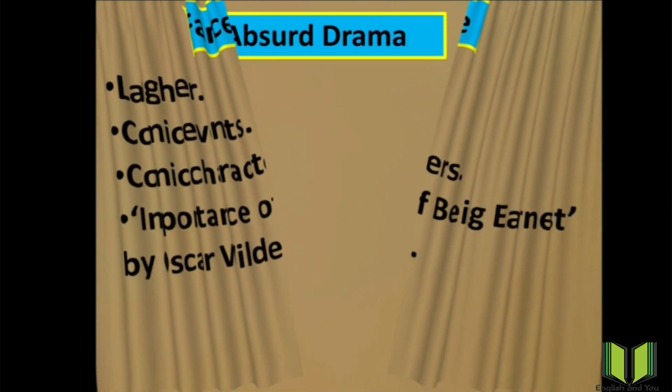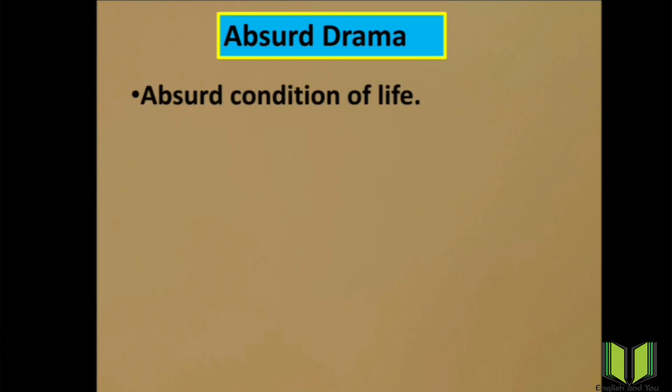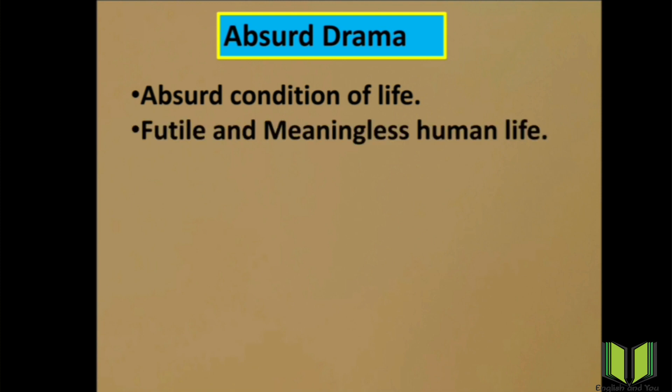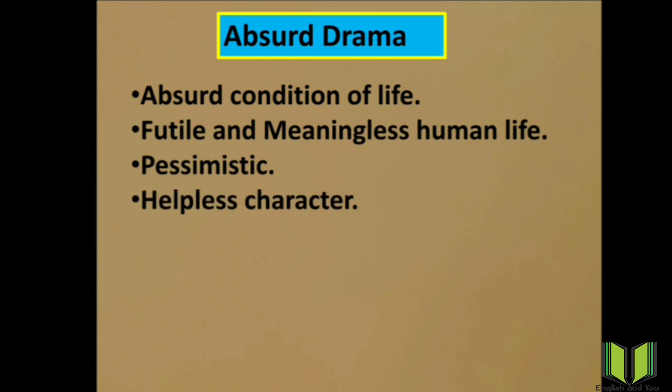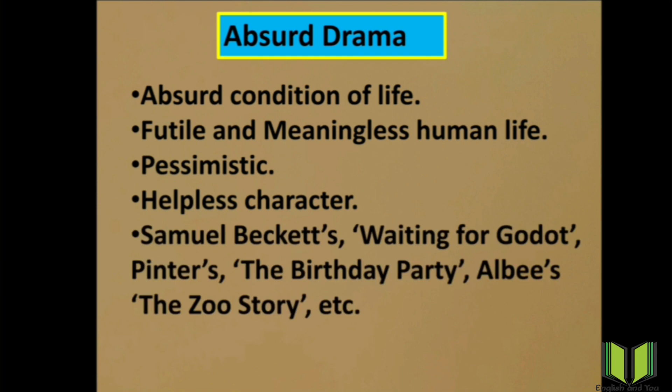The next type is Absurd Drama. In absurd drama, the dramatist shows the absurd condition of life — futile and meaningless human life is one of the important elements. A pessimistic tone is used by the dramatist, and the characters shown are helpless. For example, Samuel Beckett's Waiting for Godot, Harold Pinter's The Birthday Party, and Albee's The Zoo Story are examples of absurd drama.